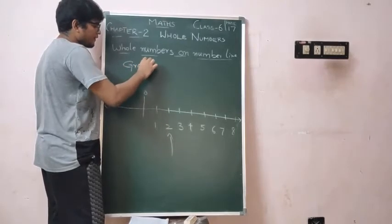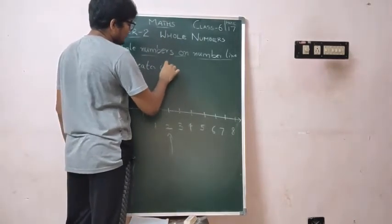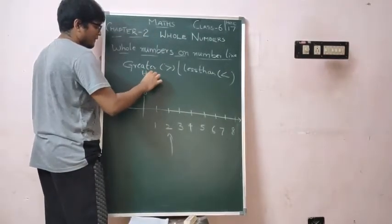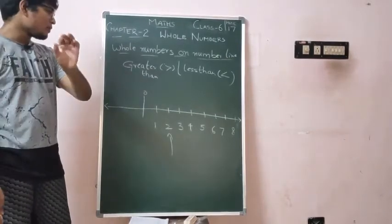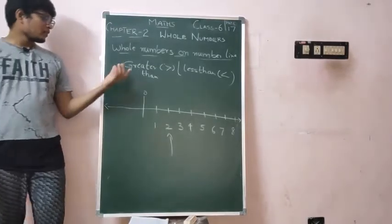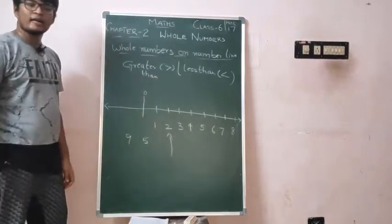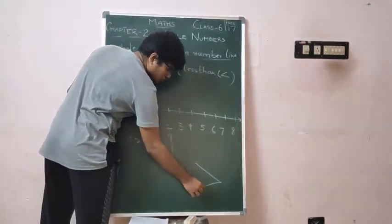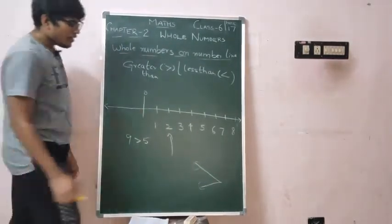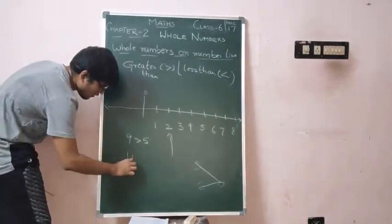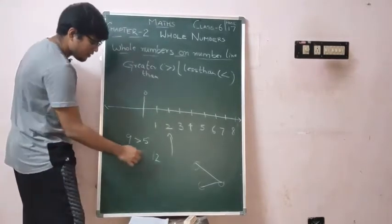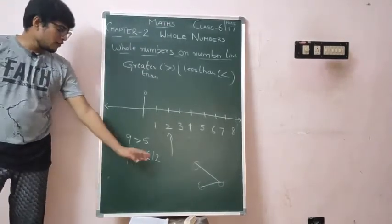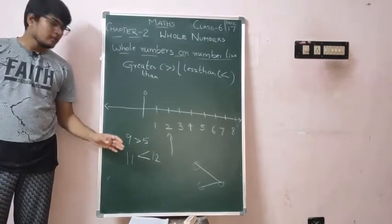Yes, what is the next topic? You have already learnt greater than, less than, and equal to. Let's take some examples. But before that, I will give a brief introduction. For 9 and 5 — which is bigger? 9. So we use the greater than symbol. The 2 points of the symbol should be on the bigger number and the 1 point on the smaller number.